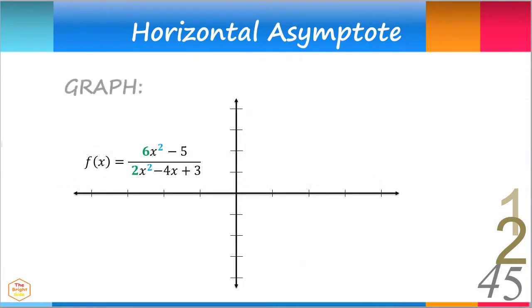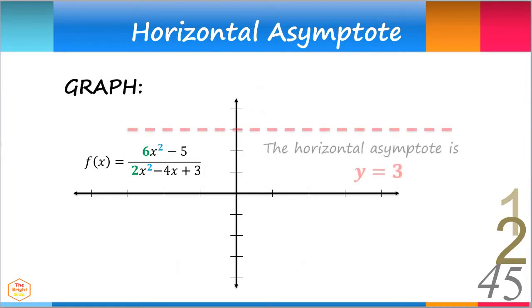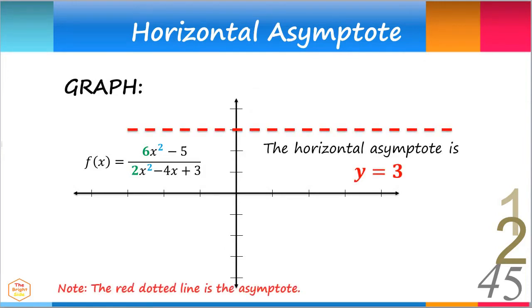Here is the horizontal asymptote y equals 3. The curve runs closer and closer to the horizontal line y equals 3 but will never intersect nor touch it.